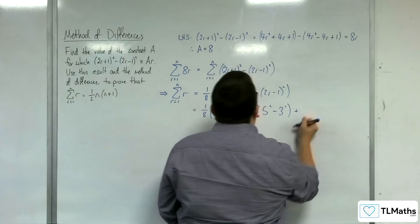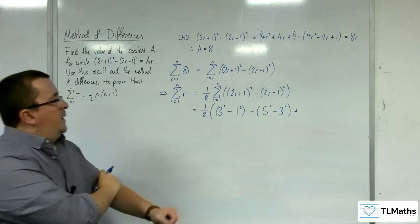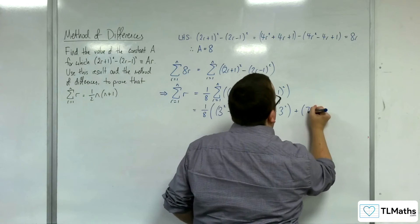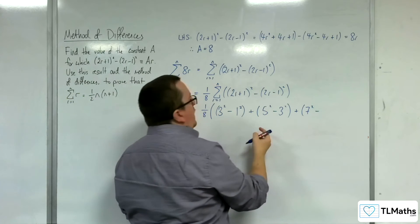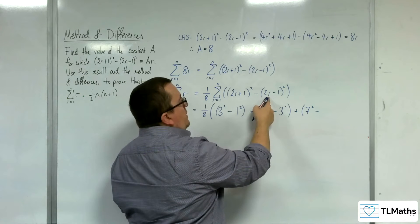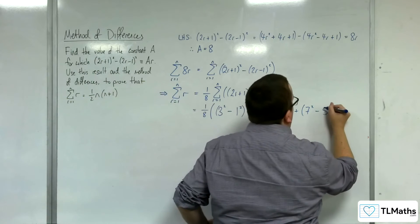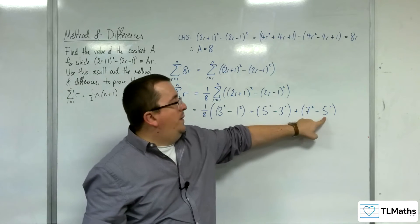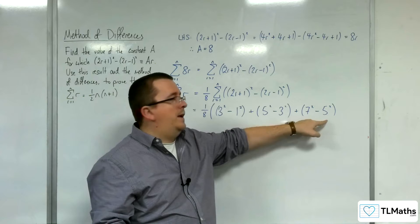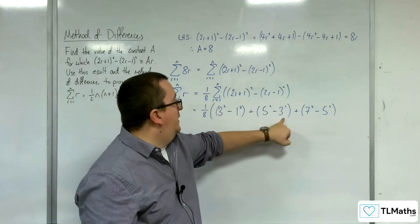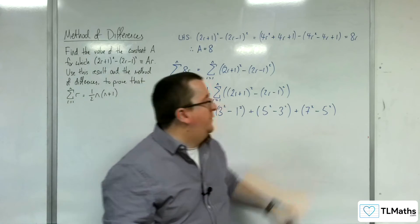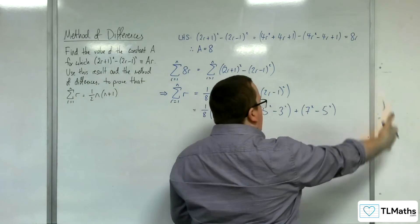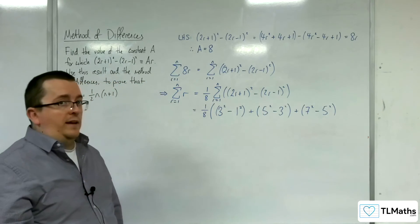Let's do one more term. Substituting in r=3, we're going to get 2×3+1, so 7², take away 2×3 take away 1, which is 5. So 5². Now we've got a 5² take away 5², so those terms are going to cancel. And the idea then is that if I go into the next term, the 7² are going to cancel as well.